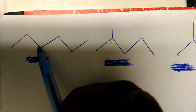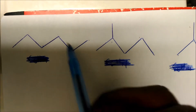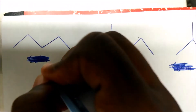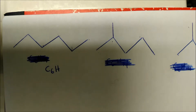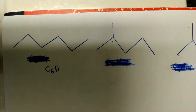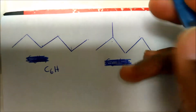Counting the endpoints and intersections, we get 1, 2, 3, 4, 5, 6 — so this is actually C6. Now, hydrogens are not explicitly shown; they're implicitly shown. We actually have to count how many hydrogens are on the chain, because in a bond line structure we only show non-carbon and non-hydrogen atoms, except for functional groups.